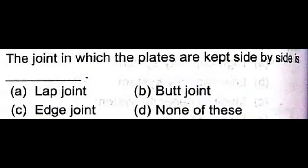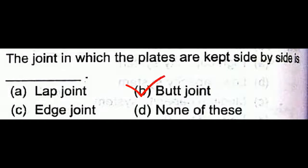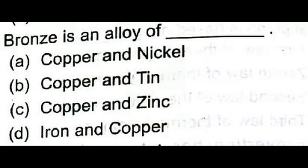The joint in which plates are kept side by side — this is neither a lap joint nor any of the others; this is a butt joint, where the edges are joined. Bronze is an alloy of copper and tin — we have already studied this many times. Remember: copper and tin form the alloy. Option B is correct.